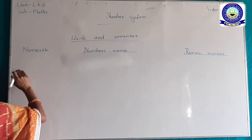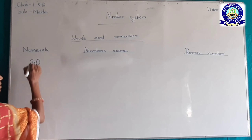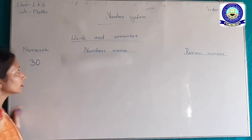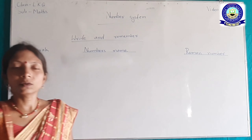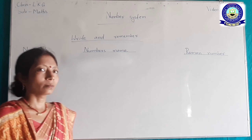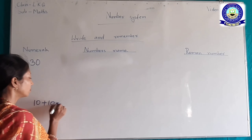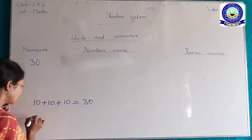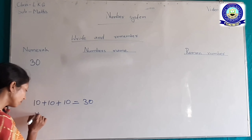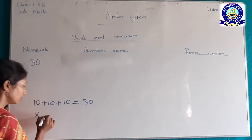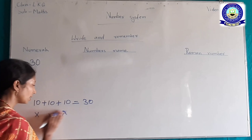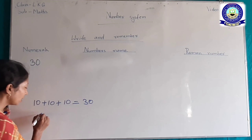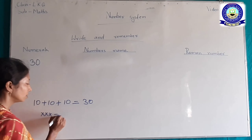31, 30 को पिछले वीडियो से ही पढ़ते हैं। 30 का क्या होता है? पिछले वीडियो में पढ़ रहे हैं — 30 का होता है Triple X, मतलब कि 10 plus 10 plus 10 equal 30। 10 का हम लोग जानते हैं X, इस 10 का भी X, इस 10 का भी X। इसका मतलब 10 तीन बार — 3 X, हम लिखेंगे 3X equal 30 होता है।